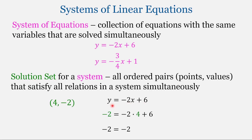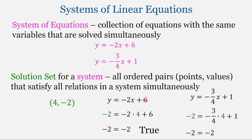For this first equation, y equals negative 2x plus 6, we'll replace x with 4 and y with negative 2. Simplifying both sides, we end up with negative 2 equal to negative 2 — a true statement. Then for the second equation, we plug in x equals 4 and y equals negative 2. Again, we end up with negative 2 equal to negative 2, a true statement. Both equations are true simultaneously, so this ordered pair (4, -2) is the solution set for this system.